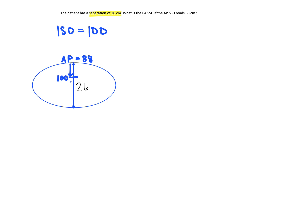Well, we can do this by taking 100 SAD, subtracting our SSD, and we get 12. So that means this distance from the skin surface to our isocenter is 12.